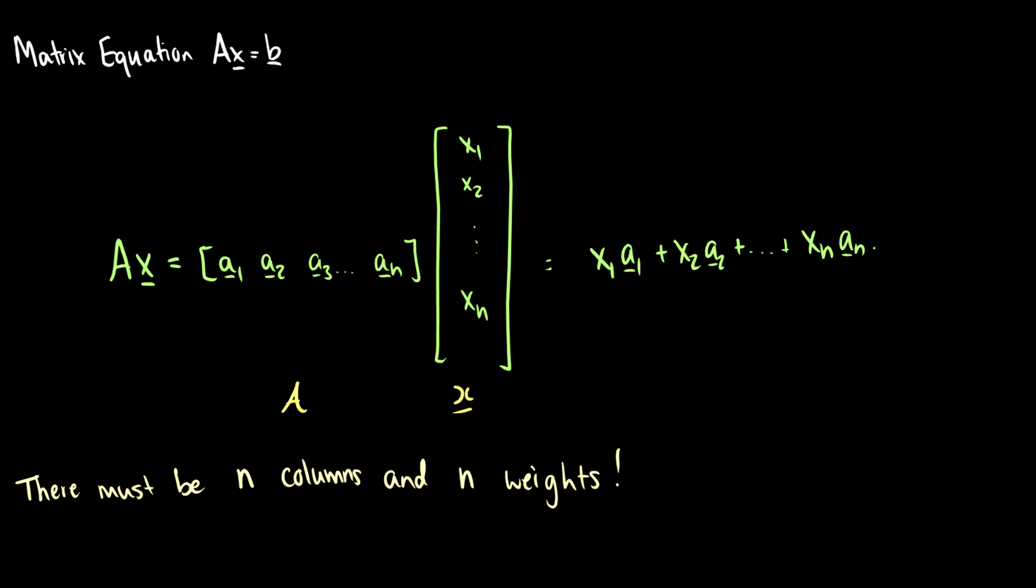This is called the dot product of a matrix and a vector and we will discuss these a little bit more later.